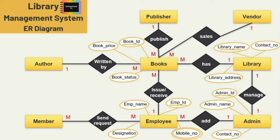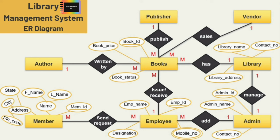Now let's see the attributes for the member entity. First we have member ID — this is the key attribute. The second attribute is name, and here I am using a composite attribute, so we break down the name attribute into two sub-attributes: first name and last name. Next is the address attribute — a user's address is also a composite attribute composed of other attributes such as pin code, state, and country. We also have contact number and member type.